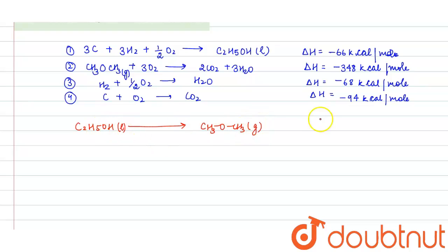So we need to find delta H isomerization for this reaction. So this is our desired equation. This desired equation can be formed by manipulation, applying manipulation in these four reactions. So when you multiply equation 3 with 3 and add it with equation 4 by multiplying it with 2 and subtract equation 1 and 2, you will get your desired equation.